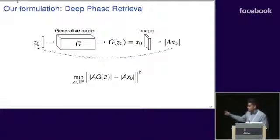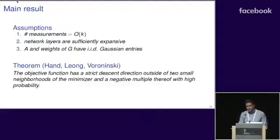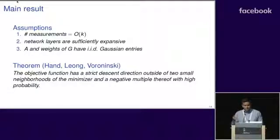We can do this by finding the best image in the range of the generative model that best fits our measurements, by minimizing this empirical risk minimization problem. What we show is that actually this objective function has favorable geometry for gradient methods, with sample complexity that's linear in the latent code dimension. What we show is that the objective function has a strict descent direction outside of neighborhoods of the minimizer and a negative multiple thereof with high probability,